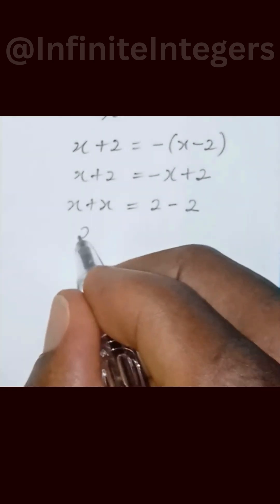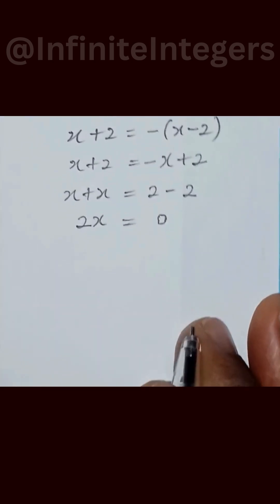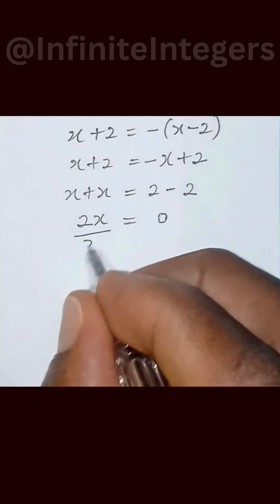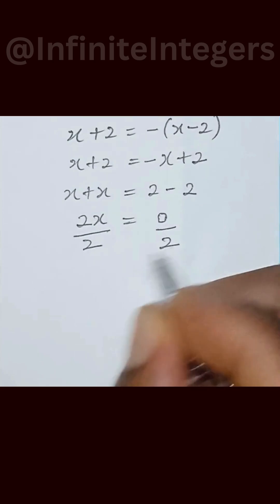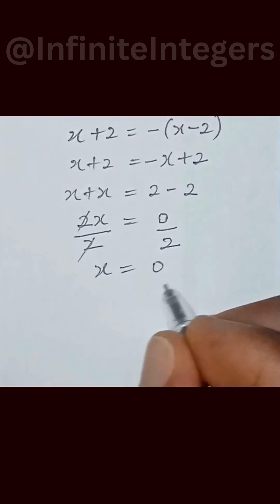Then we have here to be 2x, and this equal to 0. So we divide both sides by 2. Then let's cancel out this. So we have x equal to 0.